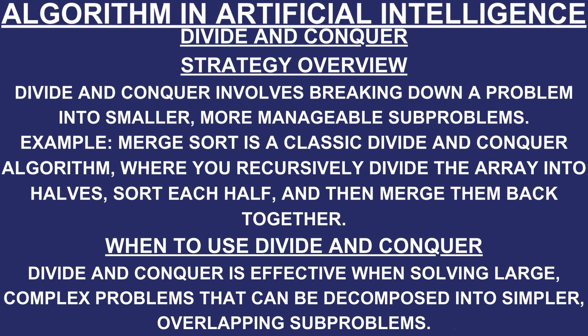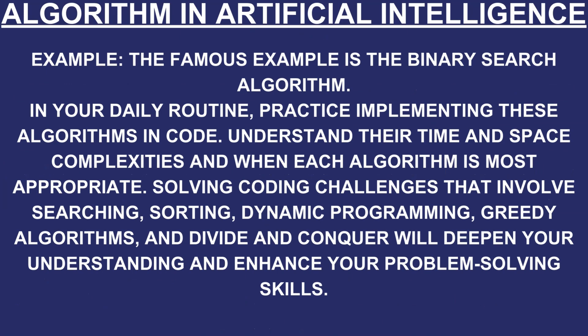Divide and conquer involves breaking down a problem into smaller, more manageable sub-problems. Merge sort is a classic divide and conquer algorithm where you recursively divide the array into halves, sort each half, and then merge them back together. Divide and conquer is effective when solving large, complex problems that can be decomposed into simpler overlapping sub-problems. A famous example is the binary search algorithm.